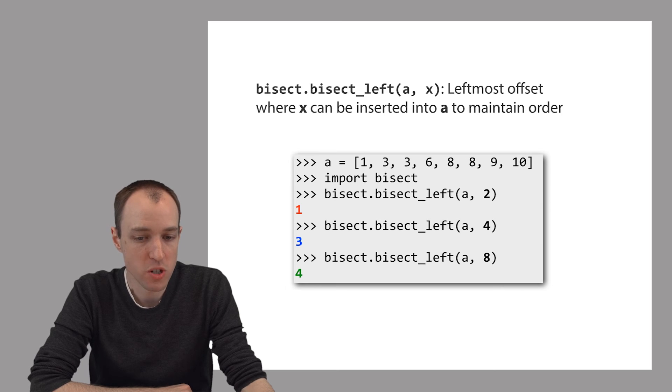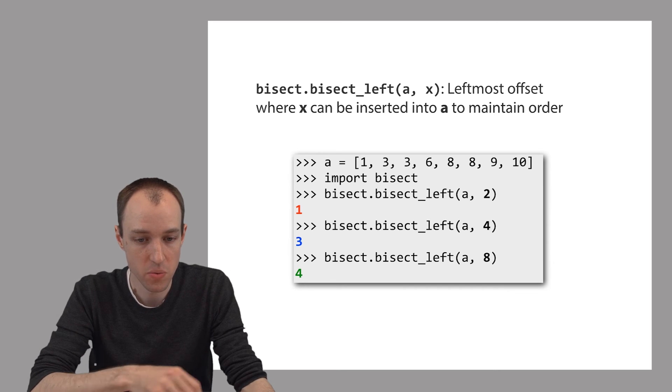And the function returns the offset where the item x can be inserted into the list a while maintaining the order of the list. So it's the leftmost position where x can be inserted in a such that a is still in order after that insertion occurs. So bisect_left is a useful function to us.